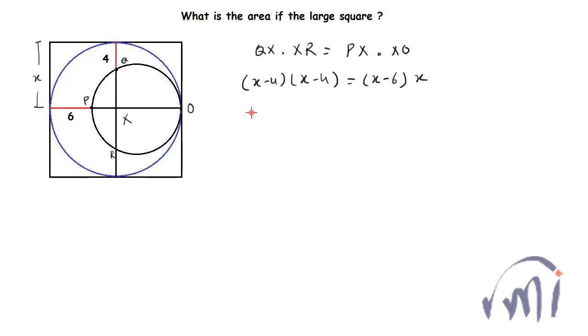This gives x² - 8x + 16 = x² - 6x. The x² terms cancel, giving 2x = 16, or x = 8. So the total side length is 2 times x, which is 16. The area of the bigger square is 16 × 16 = 256 square units.